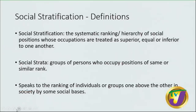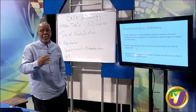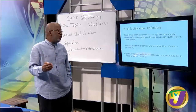Social stratification is a process by which individuals and groups are ranked hierarchically, one above the other. In society, individuals and groups are ranked one above the other by some social basis. The social basis can be class, race, colour, gender, geography — there are many, many bases of social stratification.